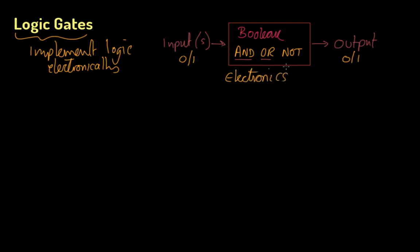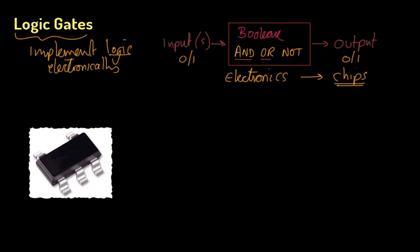It turns out that logic gates are the building blocks of the microchips we use in our computer systems today. What might these look like? Here's a picture of a real logic gate — you might recognize it looks a little like a computer chip, because it is. This is actually an AND gate. There's a company called Farnell Components, and if you search for AND gate you'll see lots of pictures of little things like this. It's got five pins.